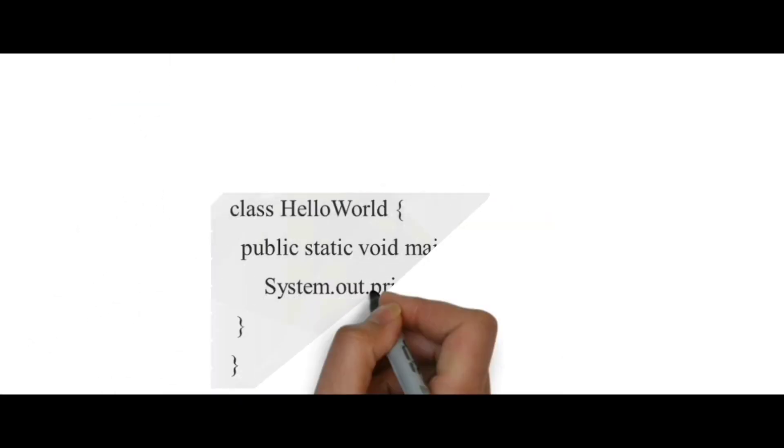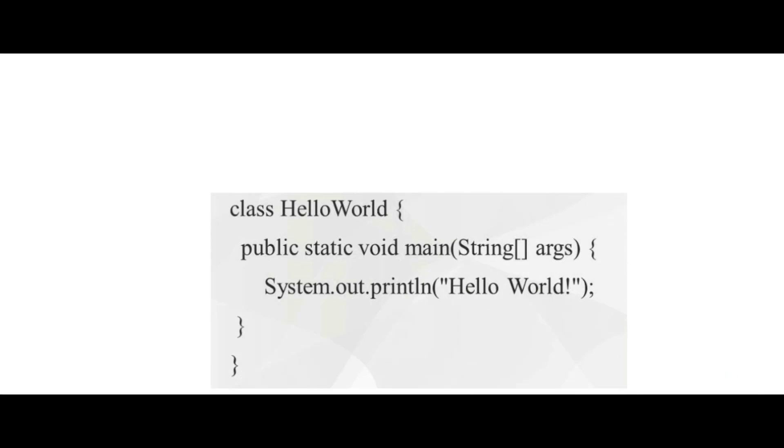The next word is public. Public is a keyword, or we can say it is an access modifier, which is used to access methods all over the program.